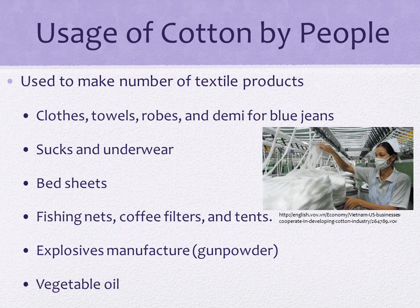The cottonseed meal that is left generally is fed to livestock. Therefore, cotton is one of the important plants used by people as it produces a wide range of products. However, on the other hand, cotton is susceptible to a wide range of insect pests. Among the most destructive are the cotton bollworm, aphids, and boll weevil.